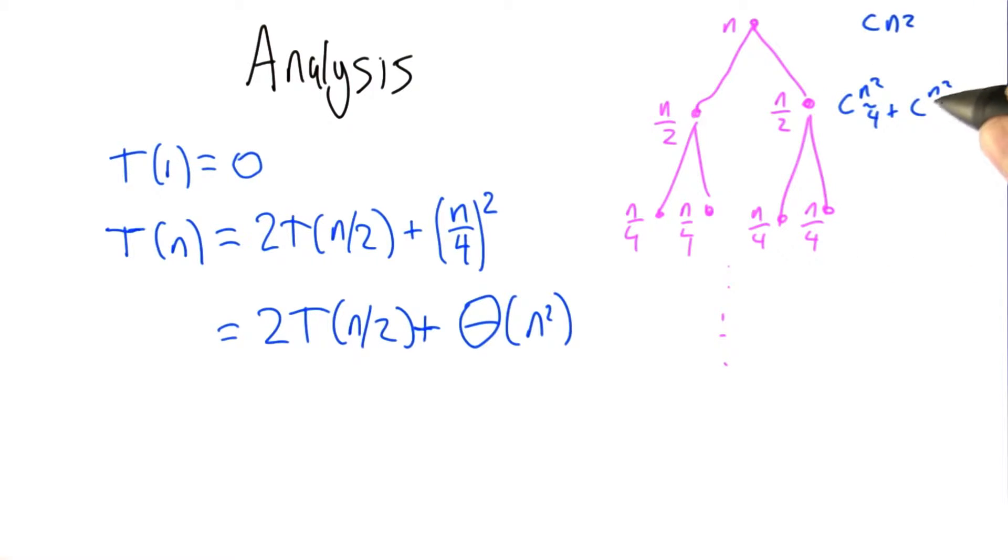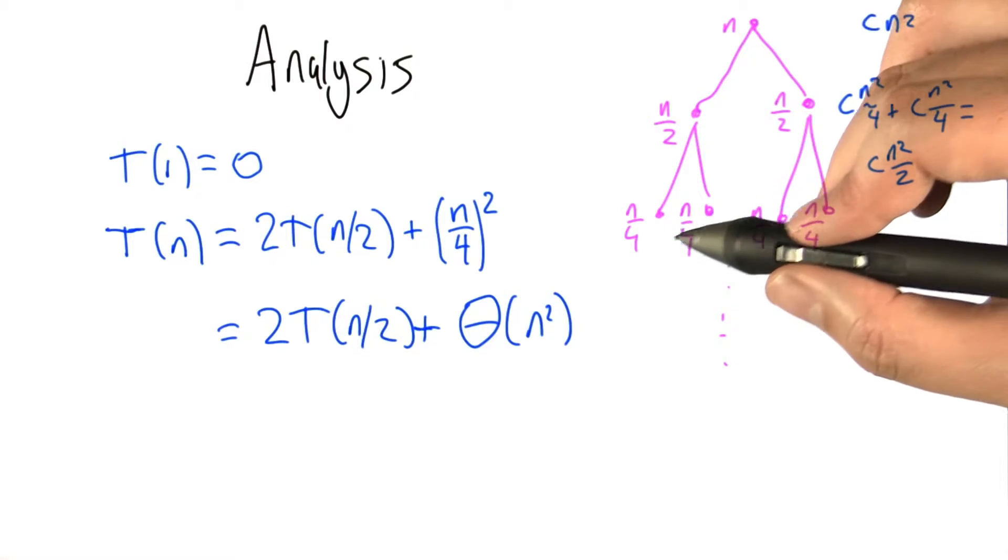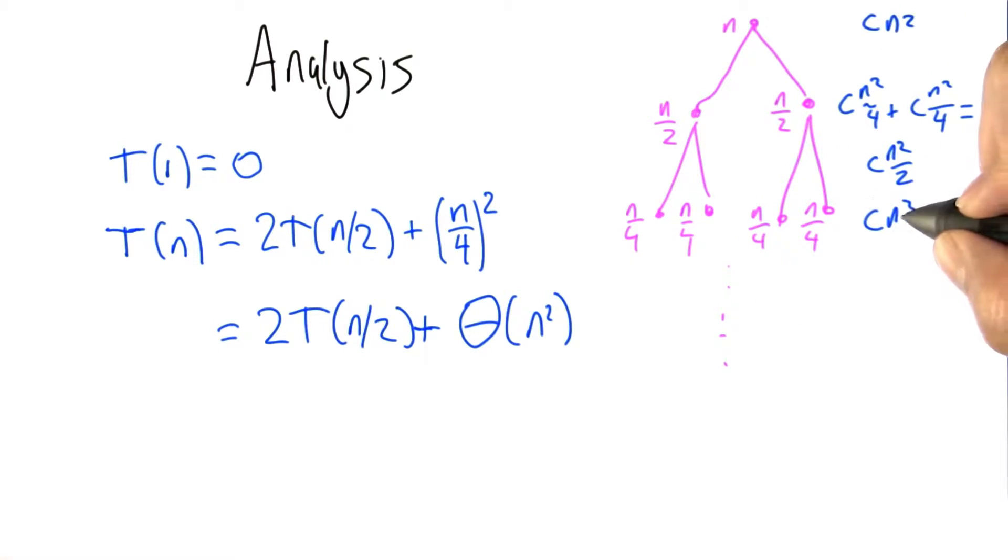which is n squared over 4, same thing twice, which is c times n squared over 2. Next level down, we square, we get 16, but there are going to be 4 of these now, so it becomes a quarter.